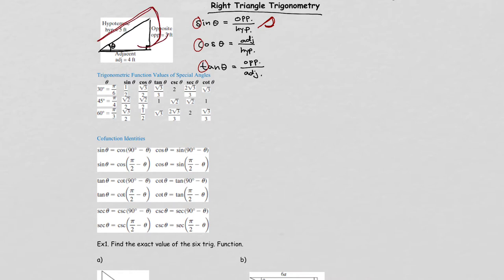So writing S in cursive gives you the shape that traces two sides — it will be 3 over 5, meaning opposite over hypotenuse. Cosine in cursive will look a certain way, giving you adjacent over hypotenuse, which in this case is 4 over 5.